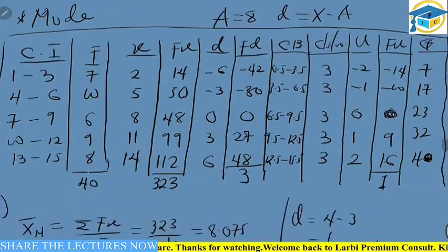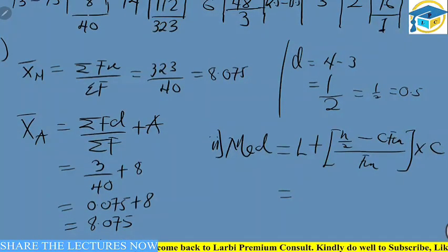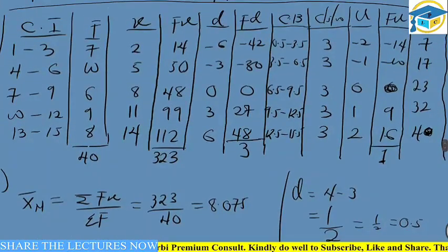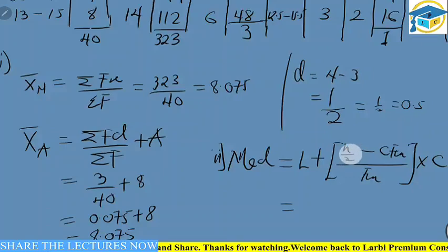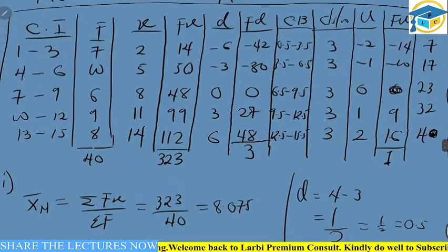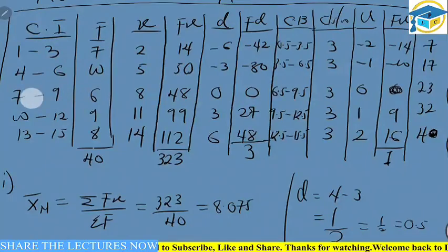The median is the middle value. For grouped frequency data, we divide total frequency by 2: 40 ÷ 2 = 20, so we need the 20th position. Looking at the cumulative frequencies: 7, then 17, then 17 + 6 = 23. The 20th value falls in the third class, so the median class is the 7–9 class interval.